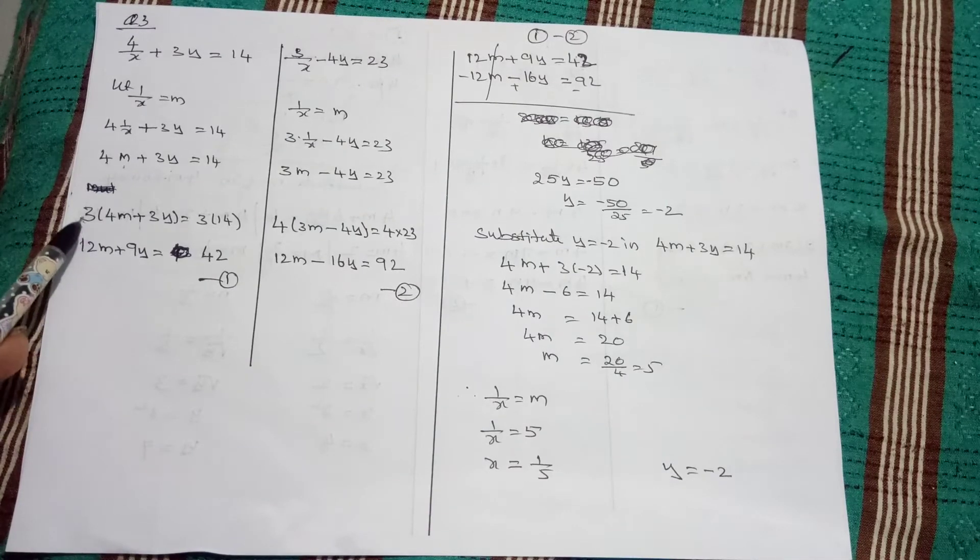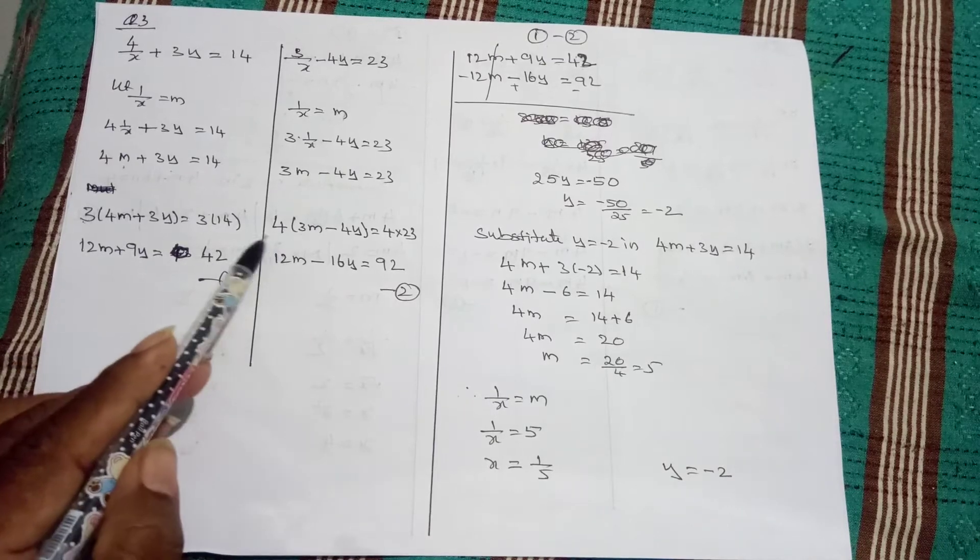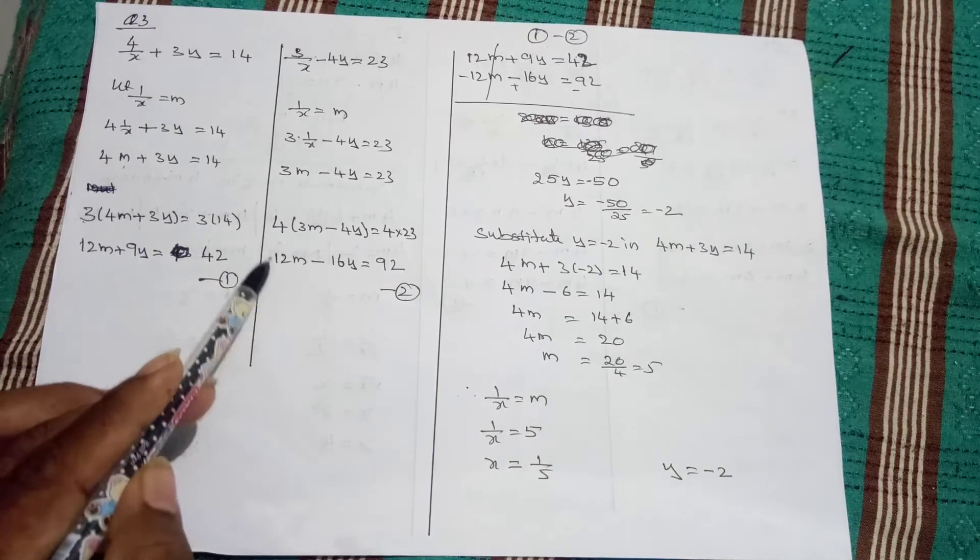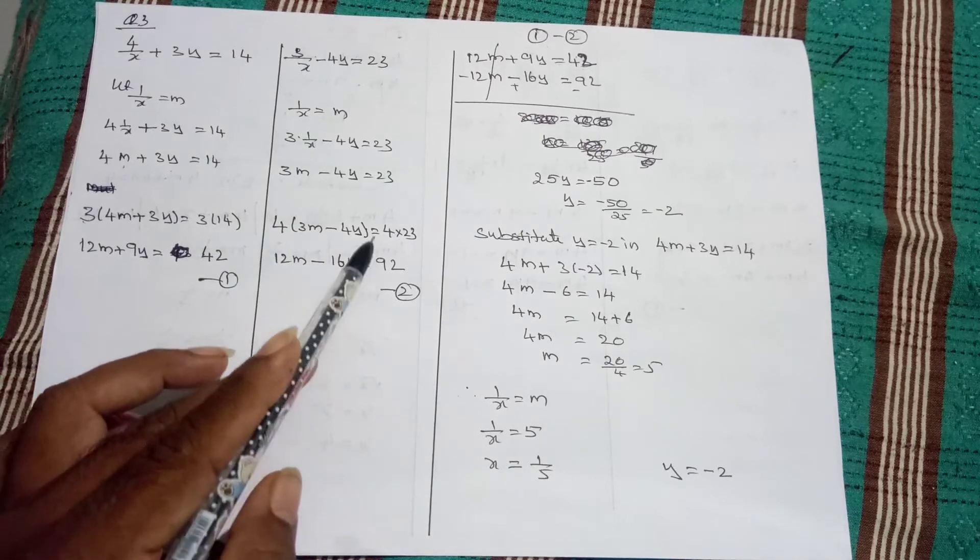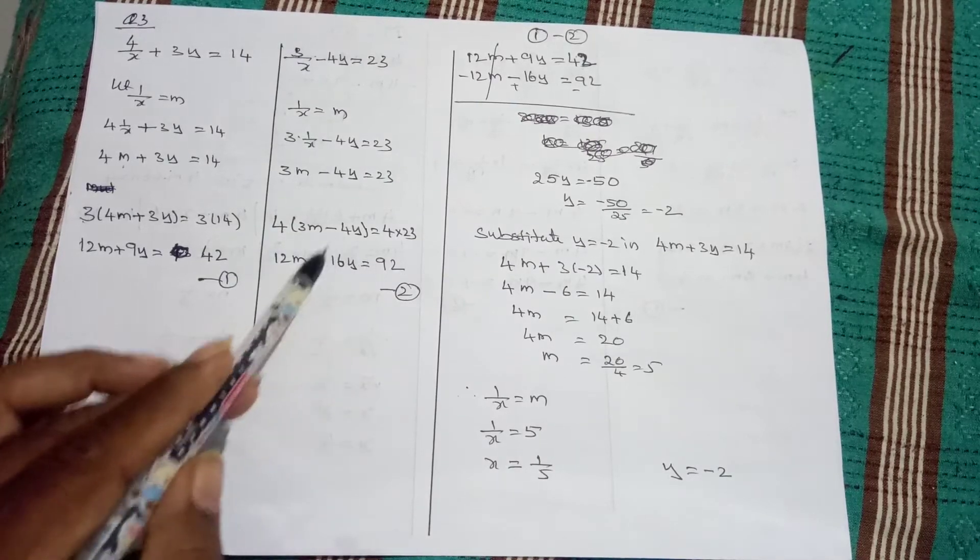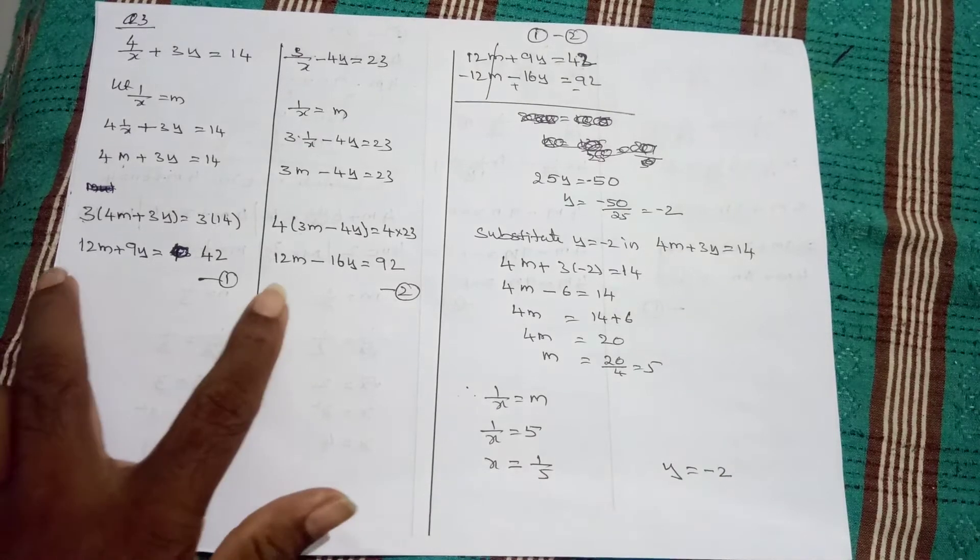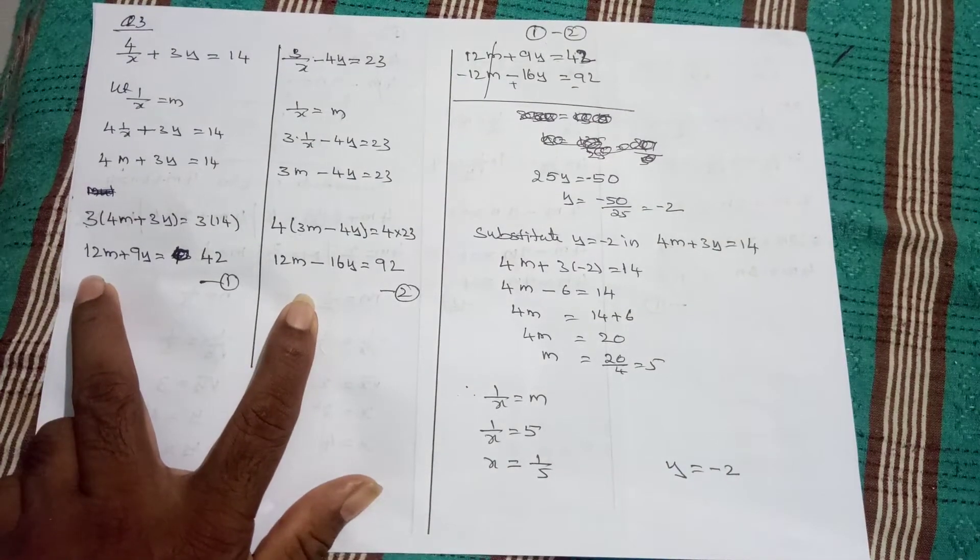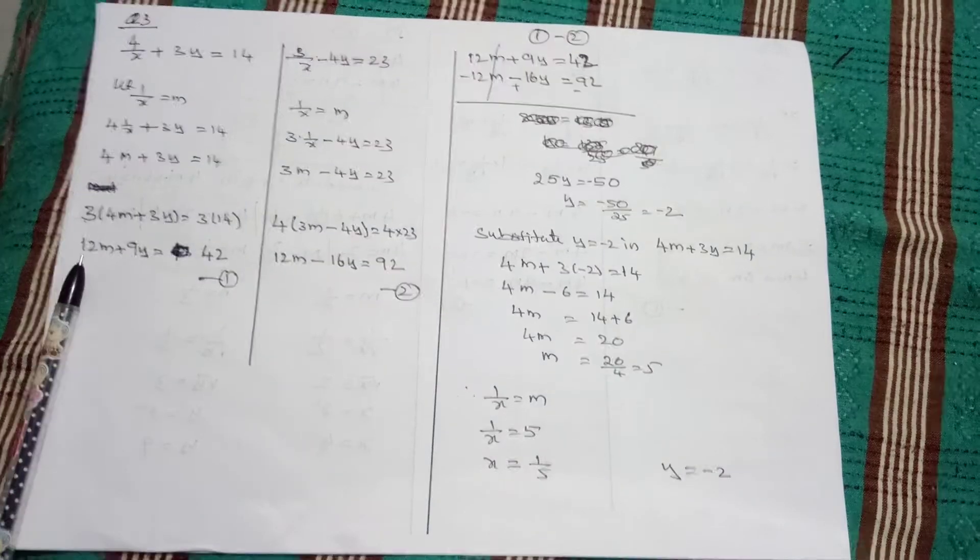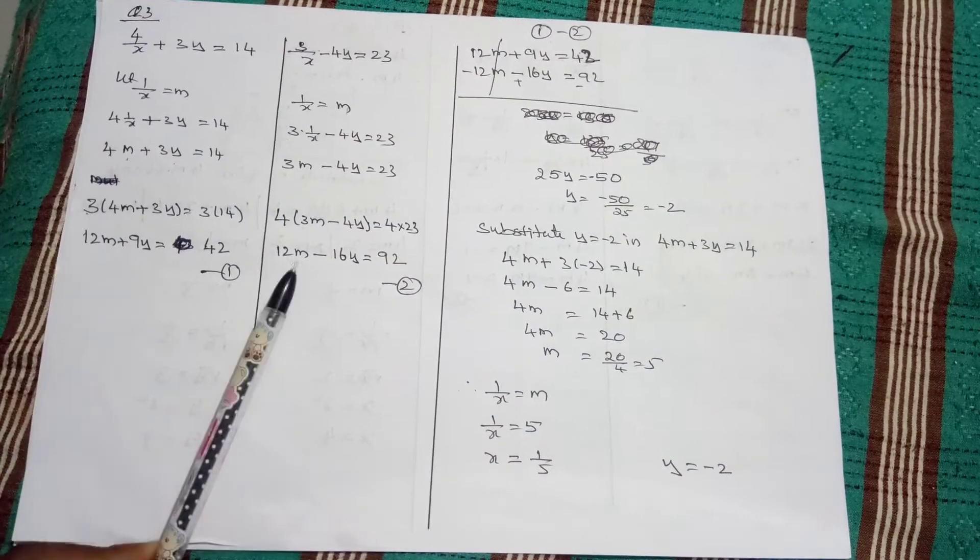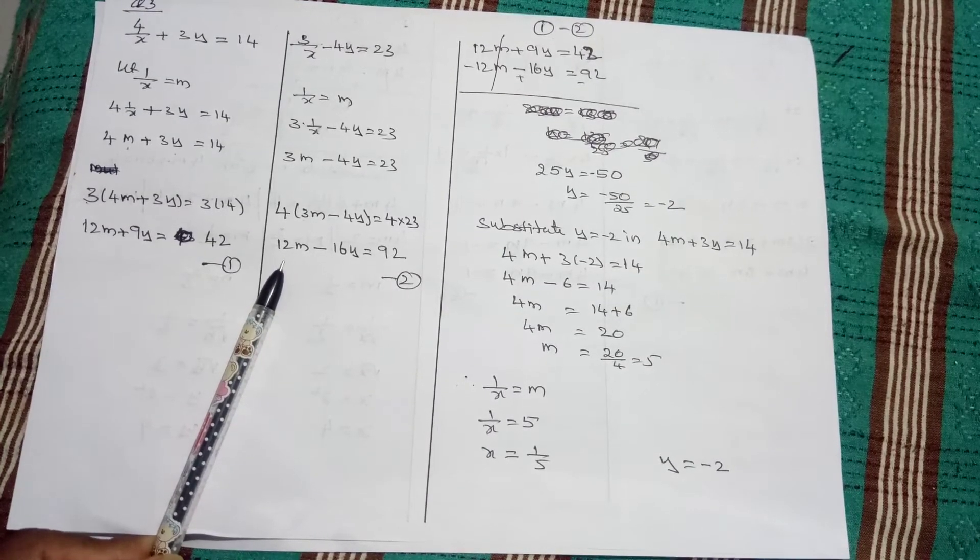Therefore, 3 times 4 is 12, plus 3 times 3 is 9y, equals 42. Now, we have two equations. We changed a little and m coefficient 12, m coefficient 12 are matching. So, we are going to cancel.